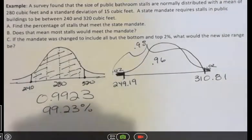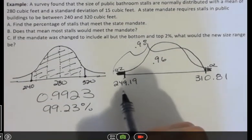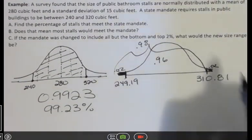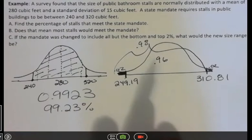So the nice thing about standardizing is I could have just said negative and positive, right? But when I don't standardize it, I actually have to find those values. So the new range would be from 249 to 310, which would make that range smaller. And fewer of the existing stalls would meet the new state mandate.